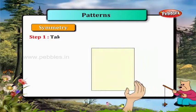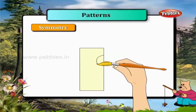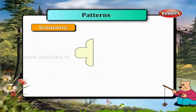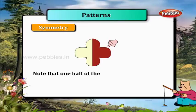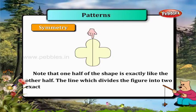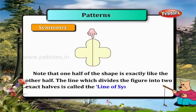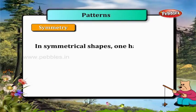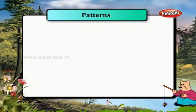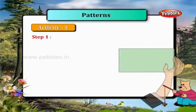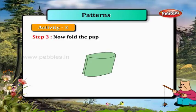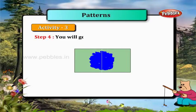Symmetry. Take a sheet of paper and fold it. Draw any shape at the folded edge of the sheet, then cut the shape. Unfold it. Note that one half of the shape is exactly like the other half. The line which divides the figure into two exact halves is called the line of symmetry. In symmetrical shapes, one half is the mirror image of the other. Activity: Take a piece of paper, spill a few drops of ink on it, fold the paper and press it. You will get a symmetric figure.